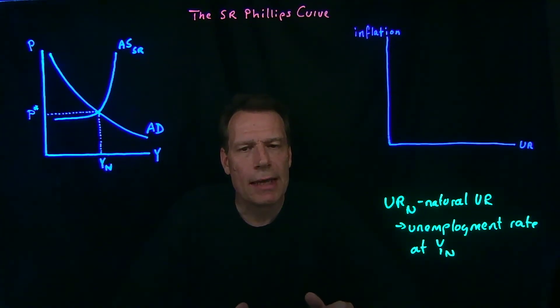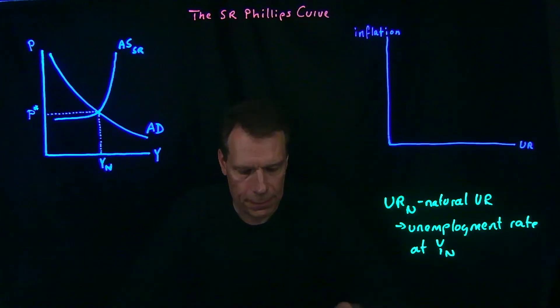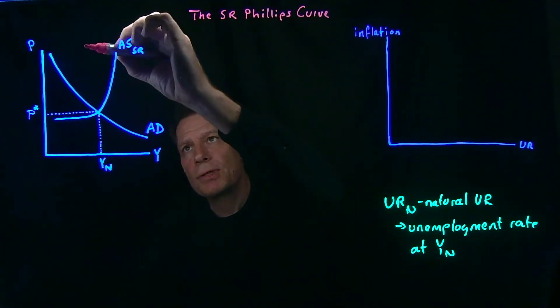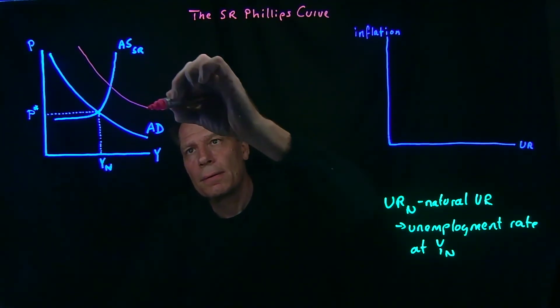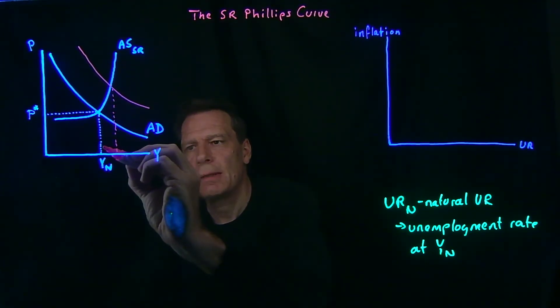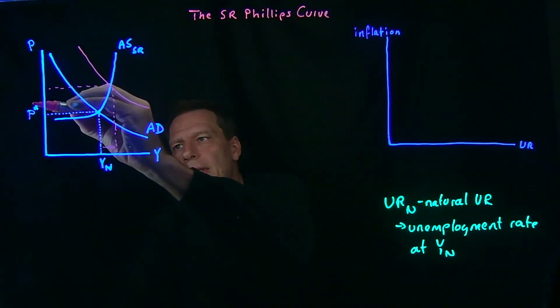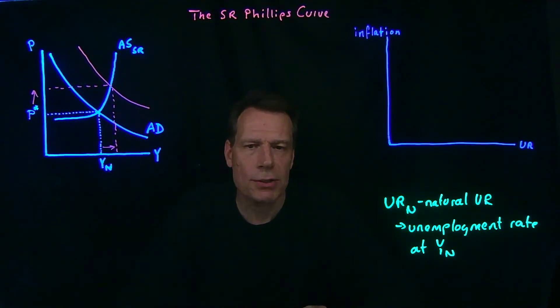So now let's ask what happens as we push aggregate demand up. When we see that boost in aggregate demand, we see an increase in GDP and an increase in prices. In other words, we see inflation.